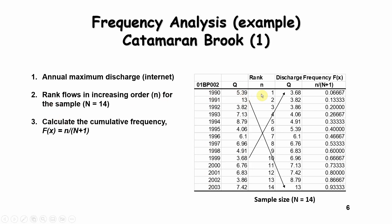The second thing we do is we copy these discharges over and we rank them from the lowest to the highest. So your lowest discharge was in 1999 at 3.68, and your highest discharge was in 1991 at 13. And given the ranks, then you can calculate the frequency or the cumulative frequency for each of the events. The cumulative frequency is given by this function, n, which is the rank, over n plus 1. The large N is the sample size. So it would be 1 over 15, because it's 14 plus 1. And this gives you the frequency, as you can see here.